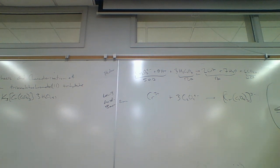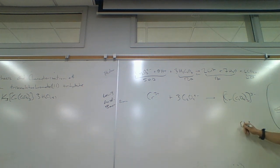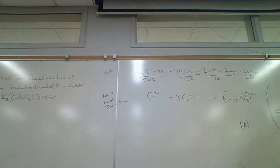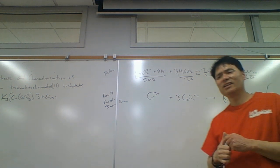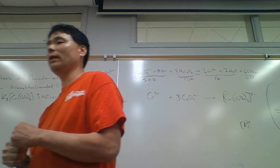So if I had potassium ions in here, this solution would be pretty close to ideal. What do I mean by ideal? If I have potassium ions in this solution, it would be pretty ideal in the sense that — did I talk about ideal solutions versus real solutions?